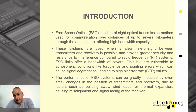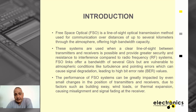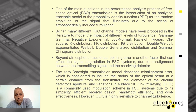One of the main drawbacks in FSO communication is atmospheric turbulence and pointing errors. There are three main physical phenomena affecting this kind of transmission: attenuation by Beer-Lambert law, turbulence, and pointing errors, which cause signal degradation and increased bit error rate. Small changes in positioning of transmitters and receivers due to factors like building sway, wind, and thermal expansion lead to misalignment.